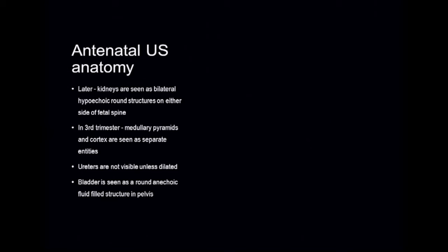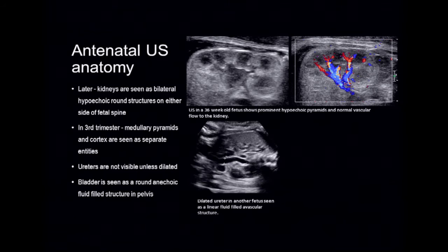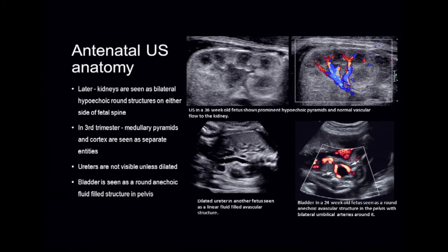As gestation progresses, the kidneys are seen as bilateral hypoechoic round structures on either side of the fetal spine, and in the third trimester you can actually see the medullary pyramids and cortex as separate entities. The ureters are not usually visible unless dilated, when they appear as tubular linear fluid-filled avascular structures. The bladder is seen as a round anechoic fluid-filled structure in the pelvis with the umbilical arteries seen on either side.